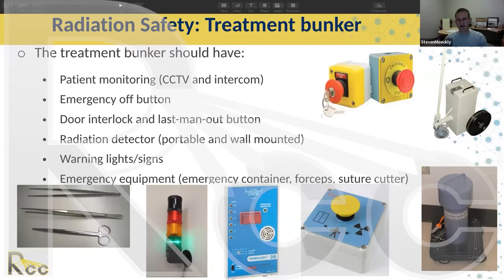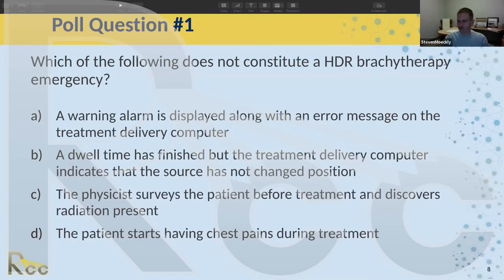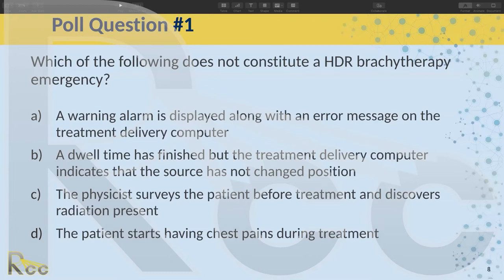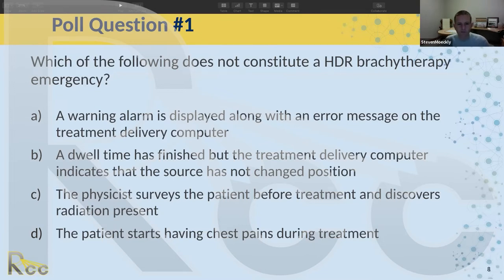Poll question one: which of the following does NOT constitute an HDR brachytherapy emergency? The options are: a warning alarm displayed with an error message; a dwell time has finished but the treatment delivery computer indicates the source has not changed position; the physicist surveys the patient before treatment and discovers radiation present; or the patient starts having chest pains during treatment.